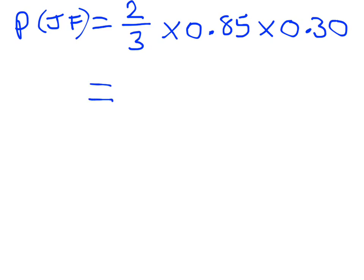When I multiply that together, that's going to give me an answer of 0.17. So that tells me there's a 17% chance that we get an apple picked at random that is a jazz apple that's gone to the factory.